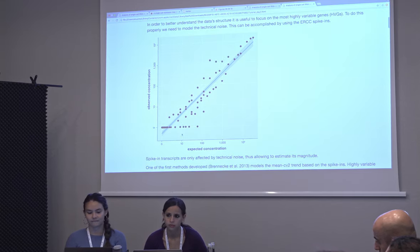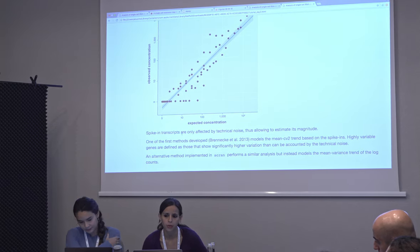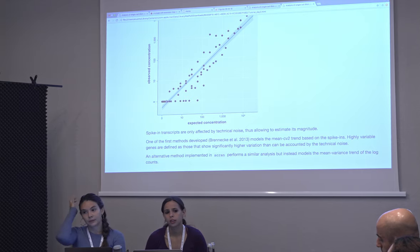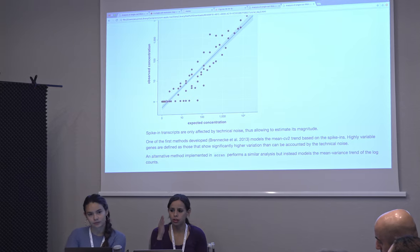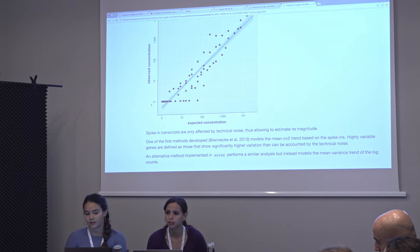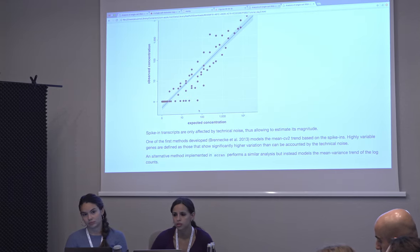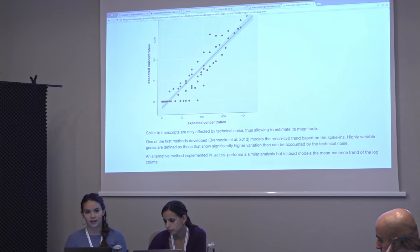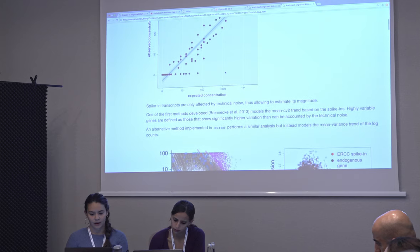The observed vs expected concentrations roughly fall on the diagonal, but especially at low concentrations there's quite a lot of noise and deviation from the diagonal. As we showed yesterday with scatter plots of technical replicates, when the material gets very low sometimes you detect the gene and sometimes you don't. From roughly zero to a hundred, a lot of observed concentrations stay at zero rather than being represented.